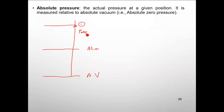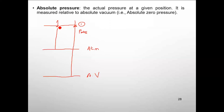P_abs is the absolute pressure — pressure measured with respect to absolute vacuum. The same pressure, when measured with a gauge, reads zero in the atmosphere. So pressure at location one with respect to the atmosphere — where the gauge is calibrated to read zero — is the gauge pressure. Gauges are normally calibrated to read zero in the atmosphere.